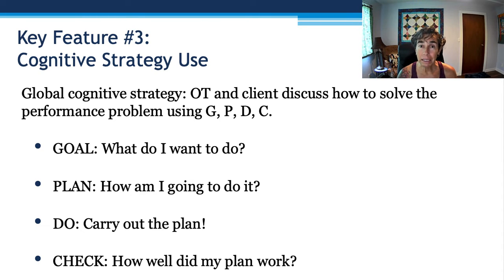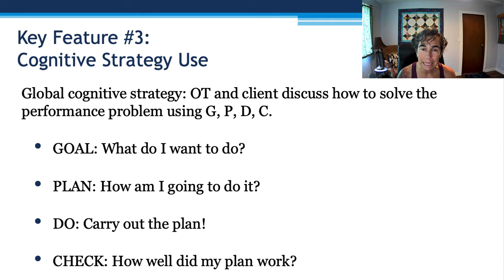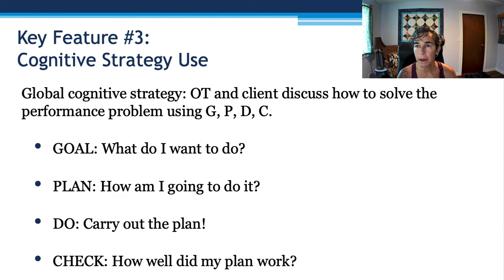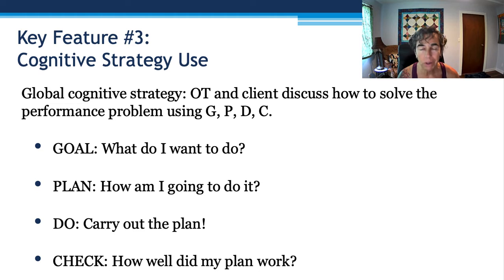Feature three: cognitive strategy use. This is where we have all the acronyms. There's a global cognitive strategy, and the OT and the client discuss how to solve the performance problem using G, P, D, and C. The G is: what's my goal? What do I want to do? Well, I want to do a forward roll. Plan: how am I going to do it? Do: carry out the plan. And check: how well did my plan work? So there's built-in feedback.